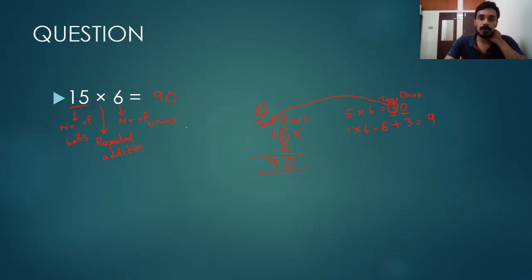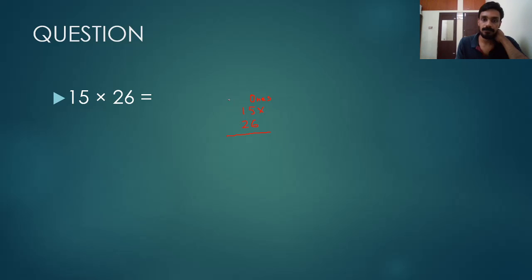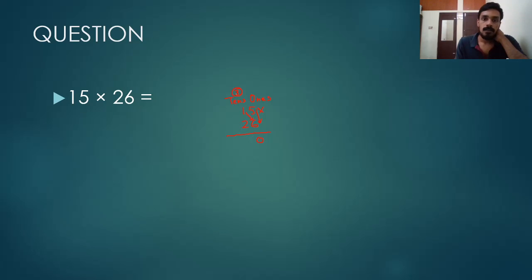Now I will show you how to multiply two 2-digit numbers. So we have two 2-digit numbers: 15 and 26. So 15 into 26. First, we will multiply the digits in the ones place — 5 and 6 — we get 30. We put 0 here and 3 as carry over. Next, we multiply 1 and 6, then add carry over 3, so 6 plus 3 is 9. We get 90 in the first step.